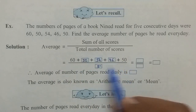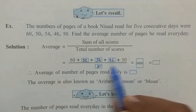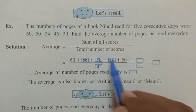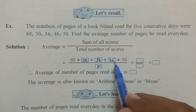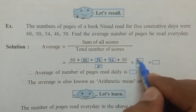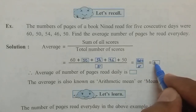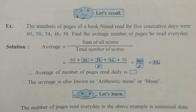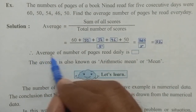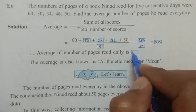The sum of the scores: 60 plus 50 is 110, plus 54 plus 46 plus 50 makes 260, divided by 5. If you perform this division, the answer is 52. Therefore the average number of pages read daily is 52.